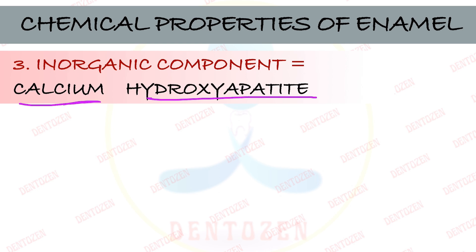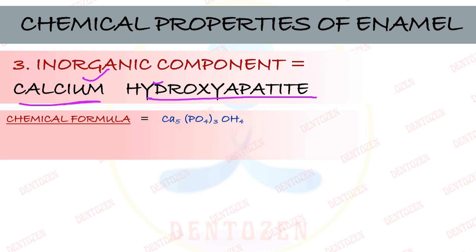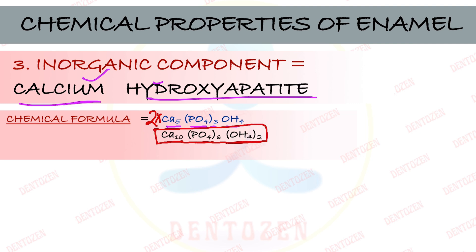The inorganic component is mainly calcium hydroxyapatite crystals, where calcium, hydroxyl, and phosphate ions are arranged in crystals. The chemical formula of hydroxyapatite is: calcium₅, phosphate₃, and one hydroxyl ion. This can also be written multiplied by two: 10 calcium ions, 6 phosphate ions, and 2 hydroxyl ions — a very important viva question.